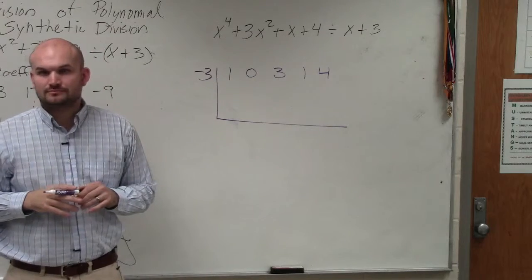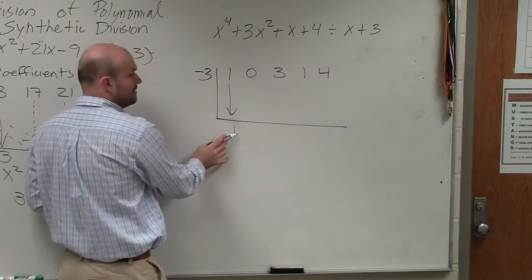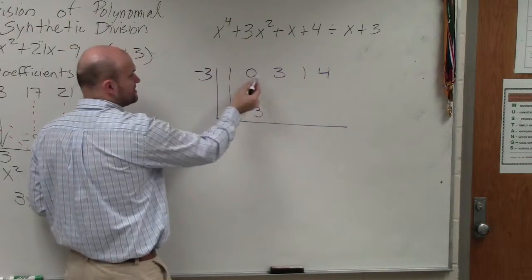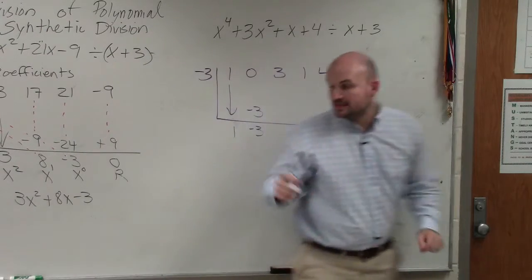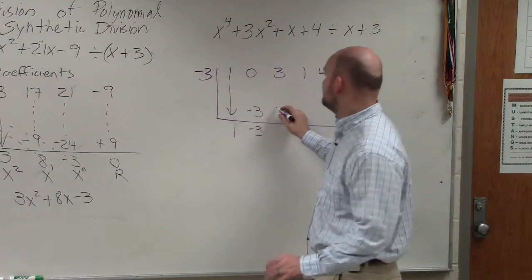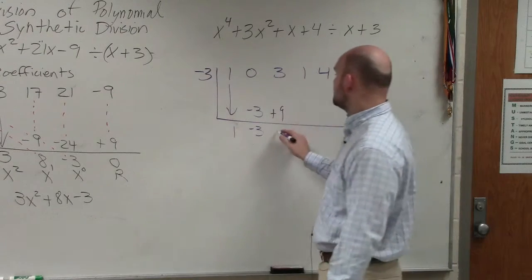Does everybody follow? First term, bring down. 1 times negative 3 is negative 3. 0 plus negative 3 is negative 3. Negative 3 times negative 3 is going to be a positive 9. 3 plus 9 is 12.